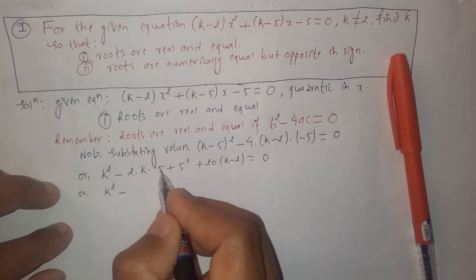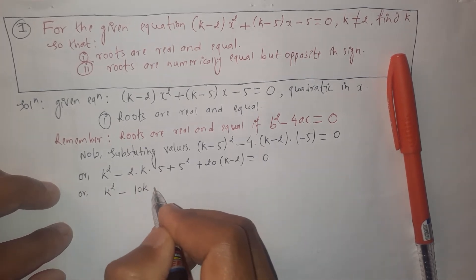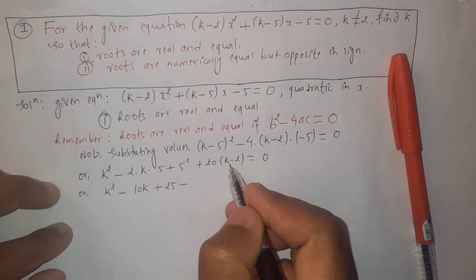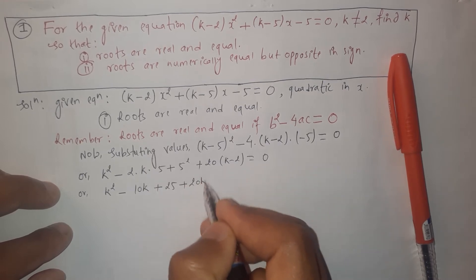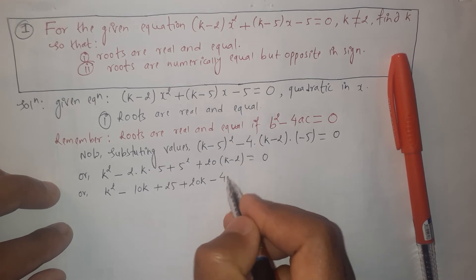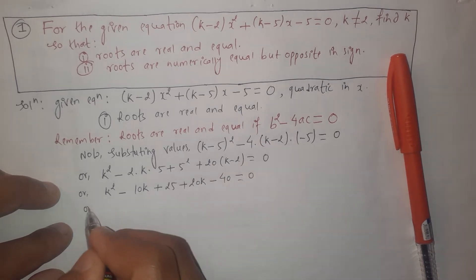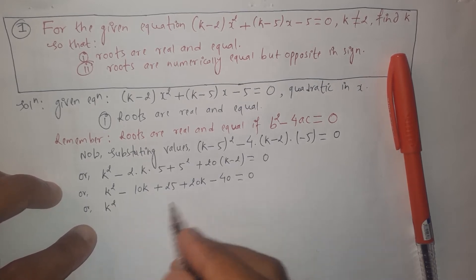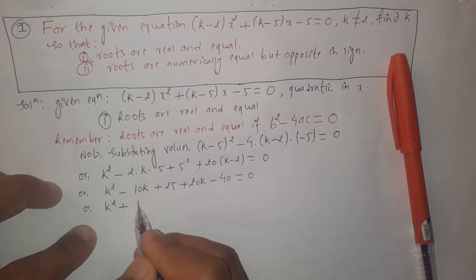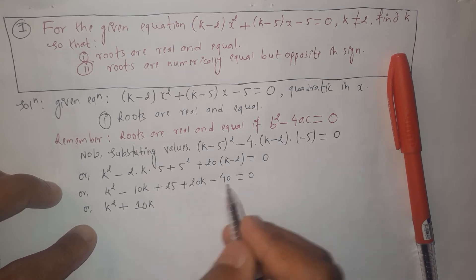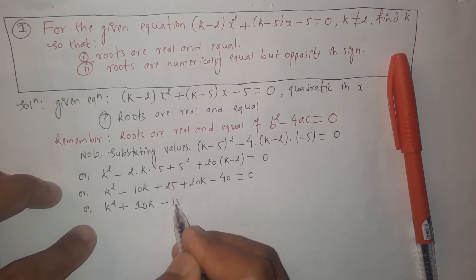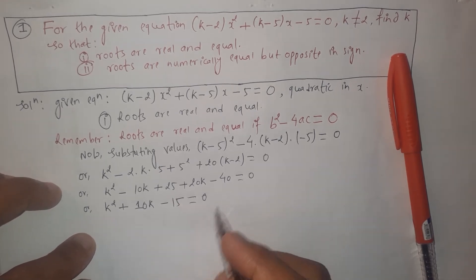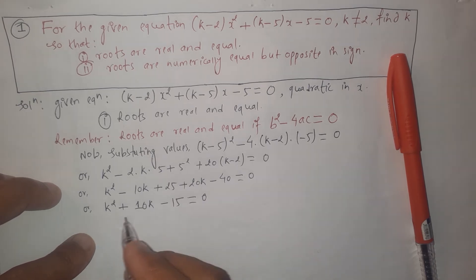So we have k² minus 10k plus 25 plus 20k minus 40 equals 0. Collecting like terms: minus 10k and plus 20k gives plus 10k, and 25 minus 40 gives minus 15. This simplifies to k² plus 10k minus 15 equals 0, which is a quadratic equation in the variable k, so there will be two values of k.